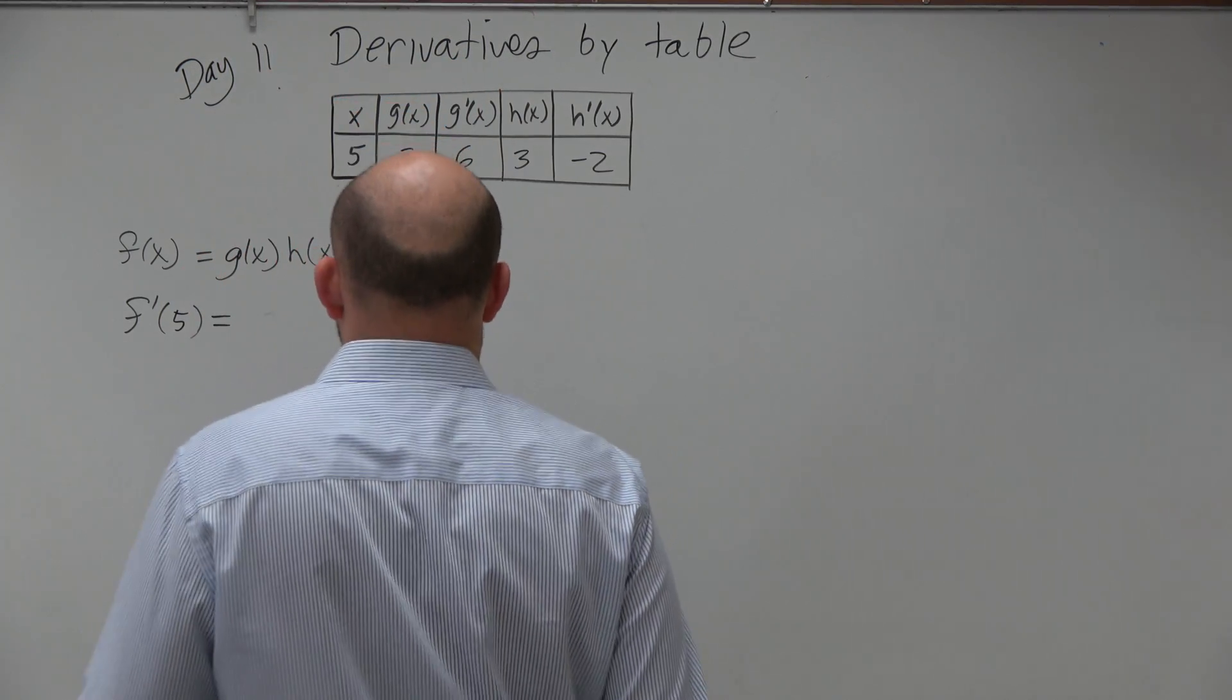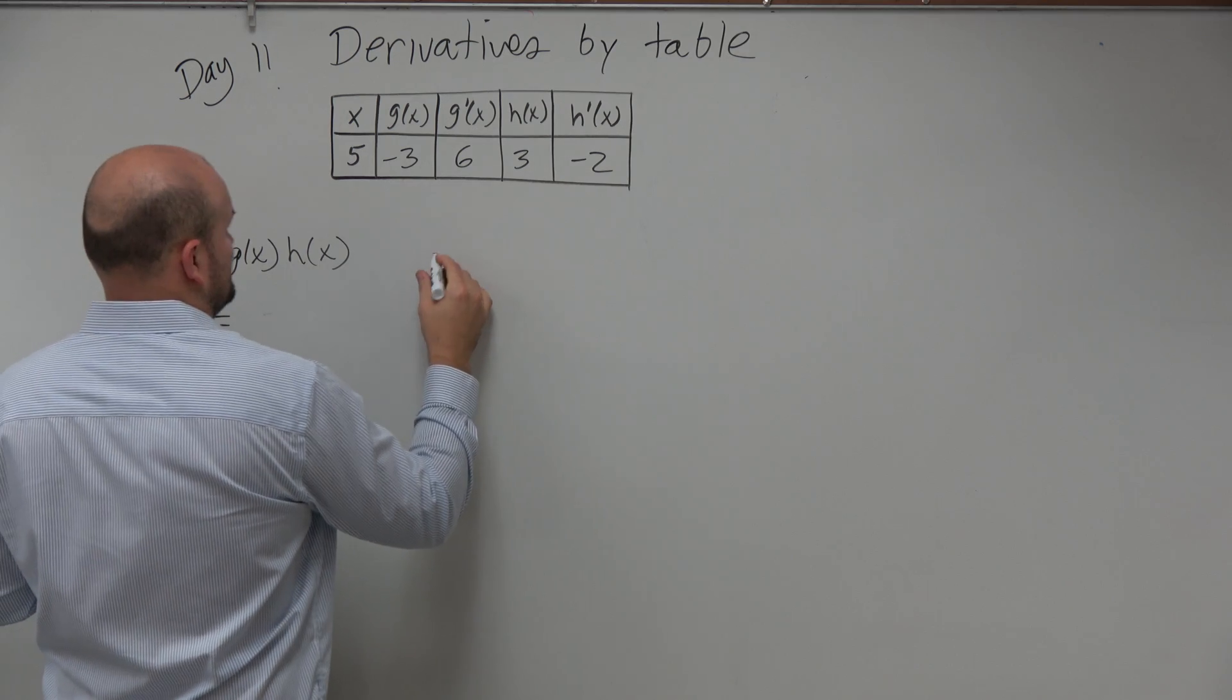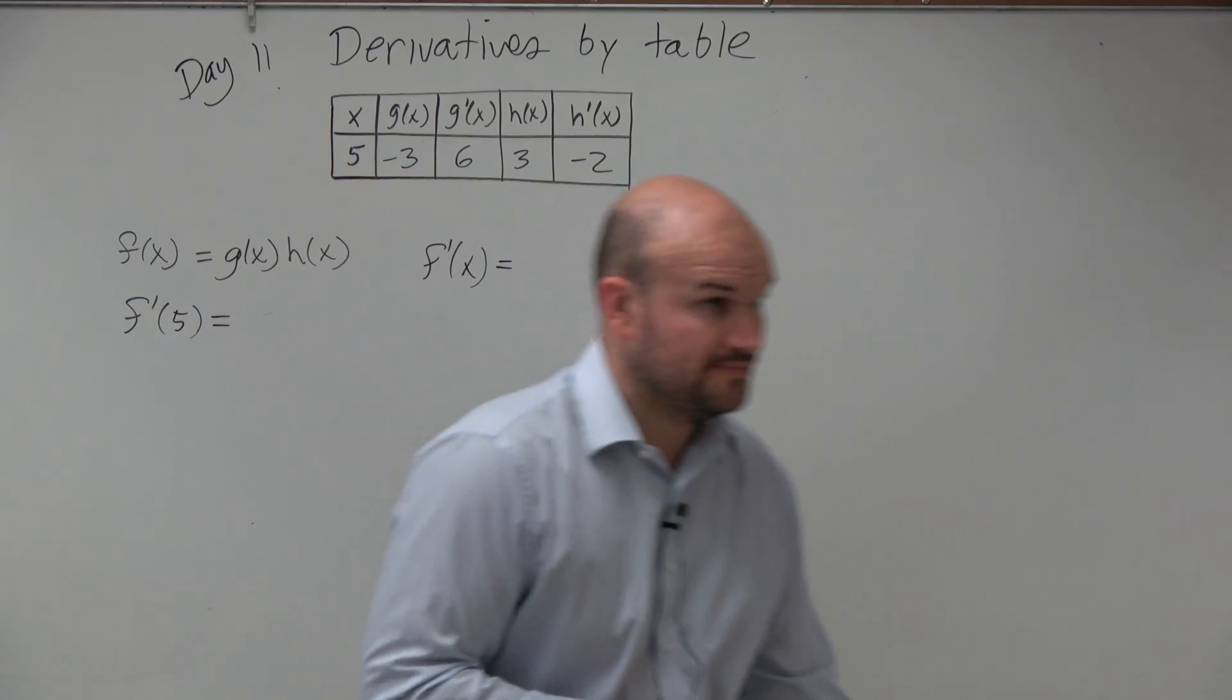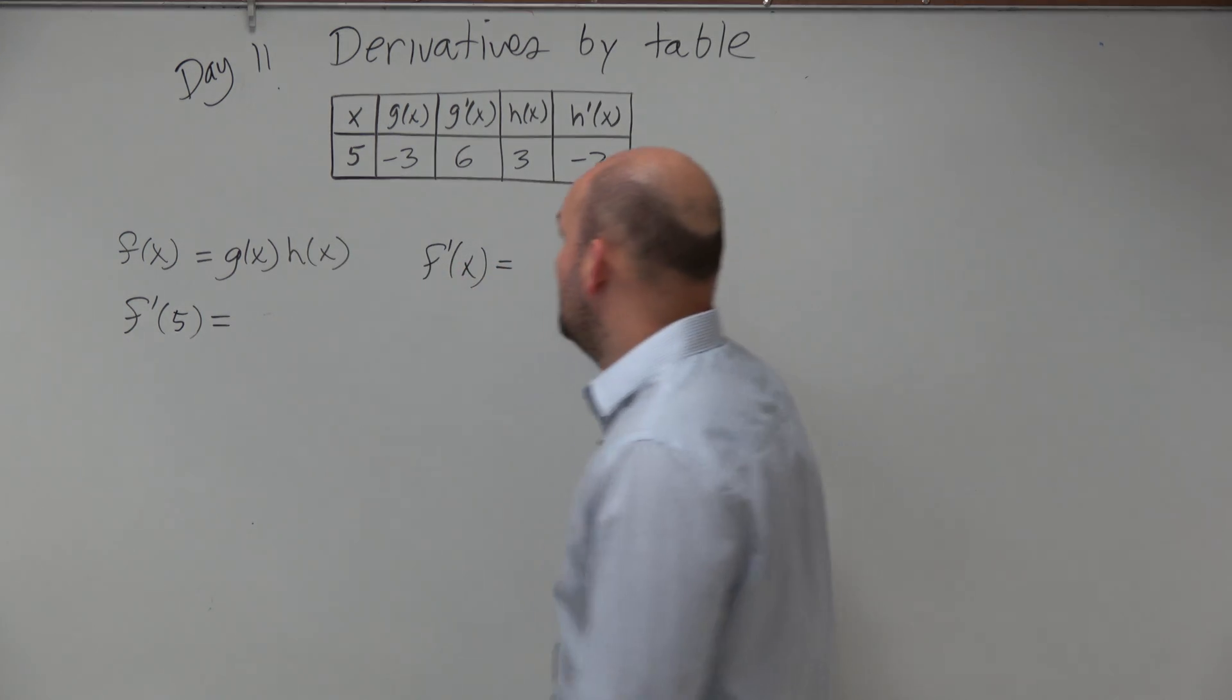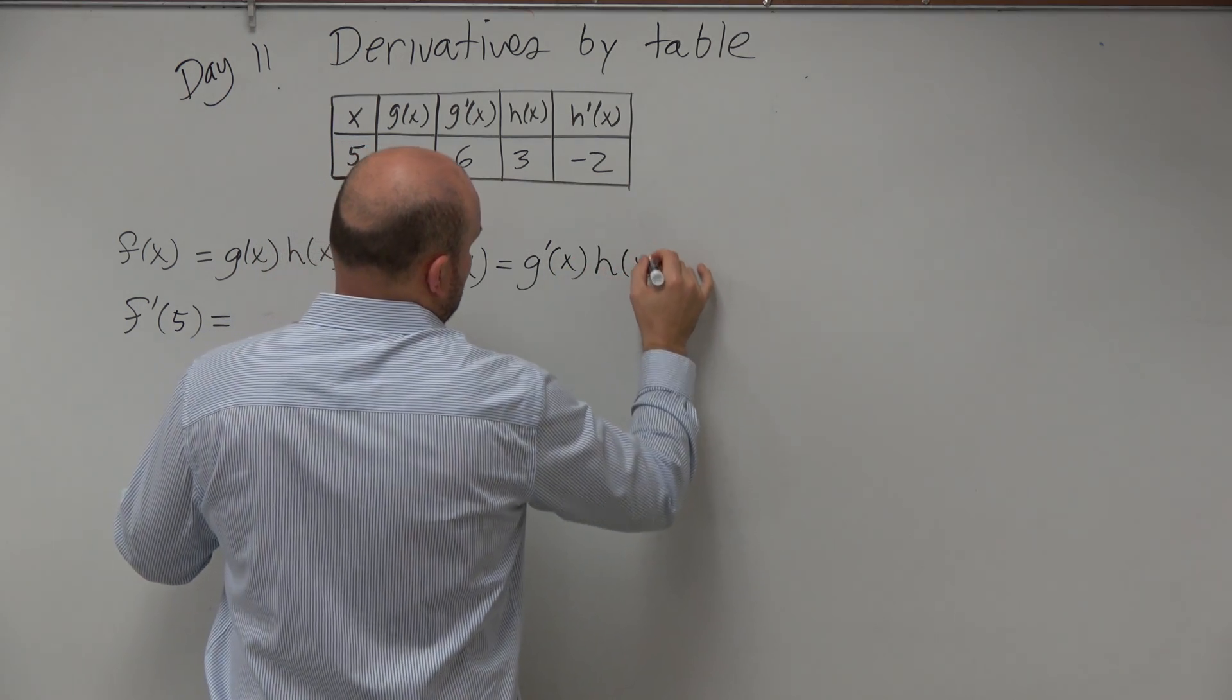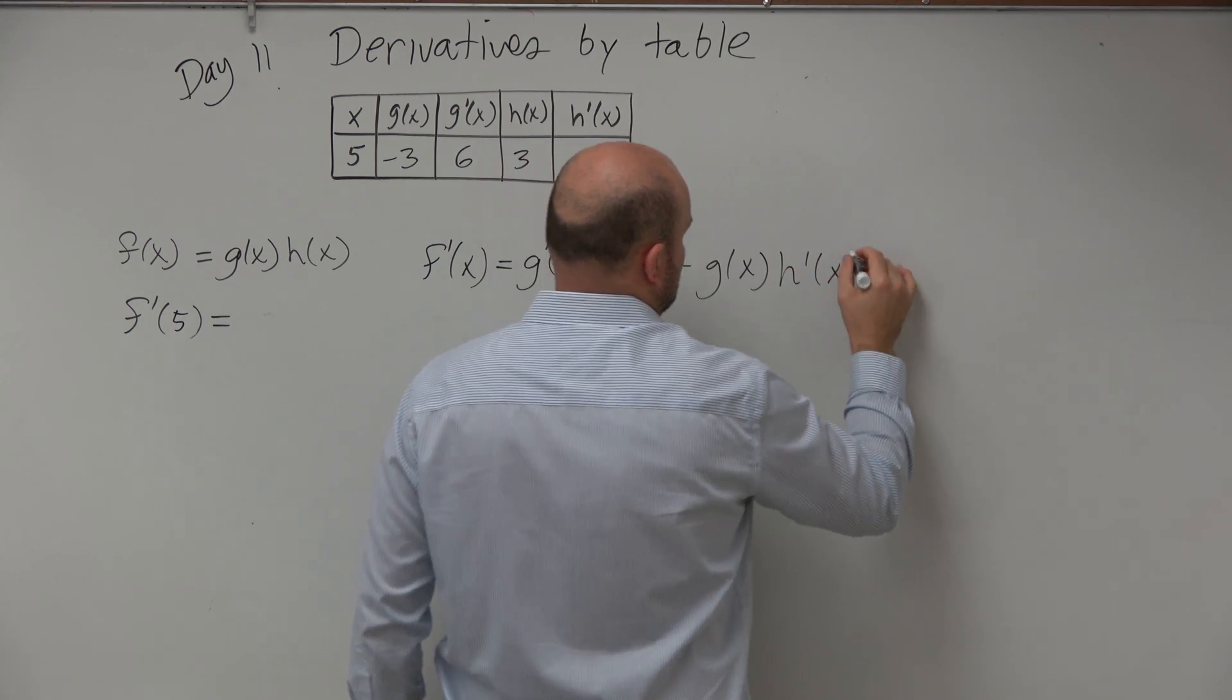So the first thing, ladies and gentlemen, that we're going to want to do here is we're going to need to find the derivative. So we want to find the derivative of f of x. To find the derivative f prime of x, we're going to take the derivative of our first term, g of x, times by h of x, add it to g of x times h prime of x.